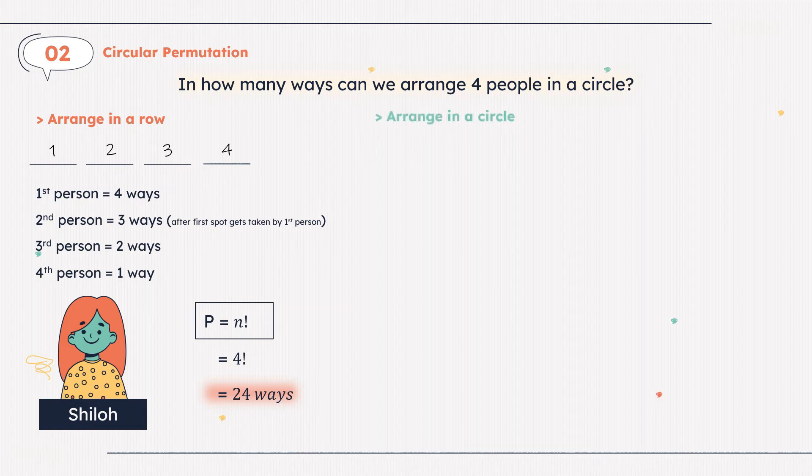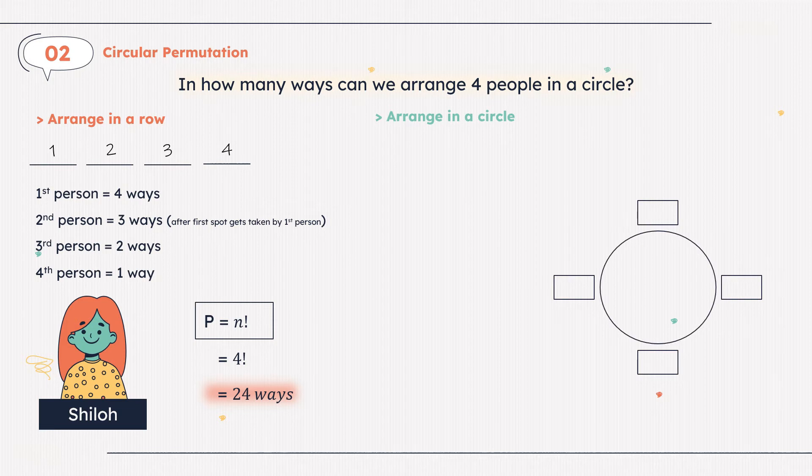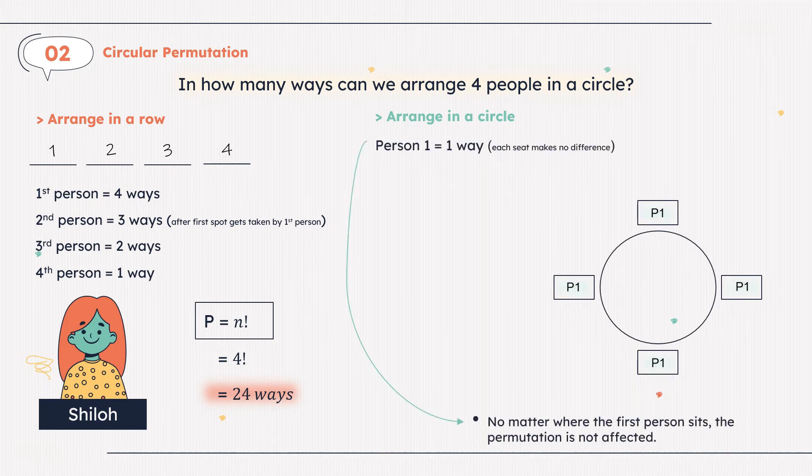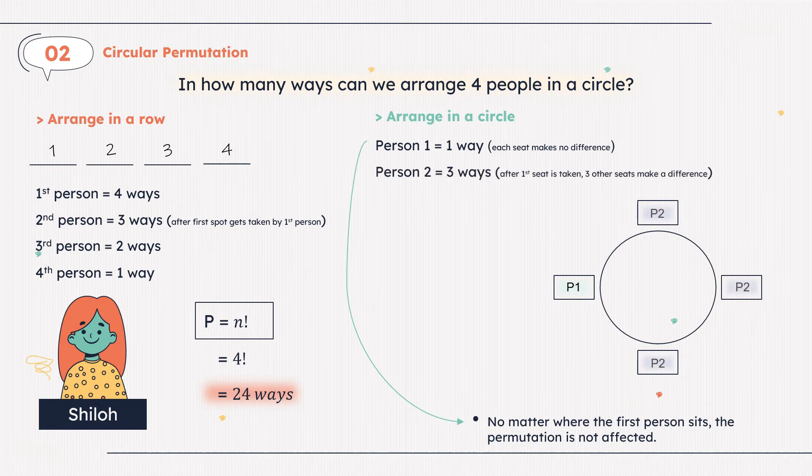Now in a circle. Person 1 only has 1 way, because no matter where the first person sits, the permutation is not affected. Therefore, person 1 can sit in any vacant seat. Let's say person 1 sat in the left seat. Person 2 has 3 ways. After the first seat is taken, 3 other seats make a difference.